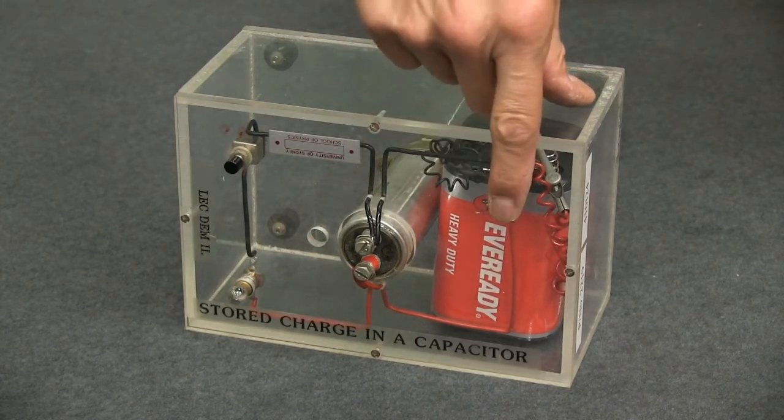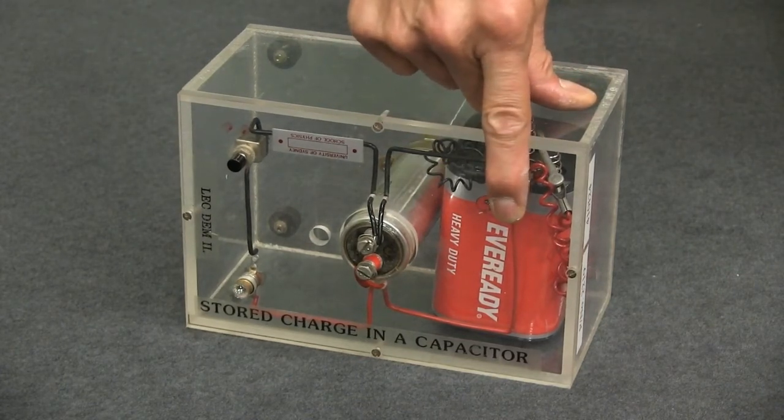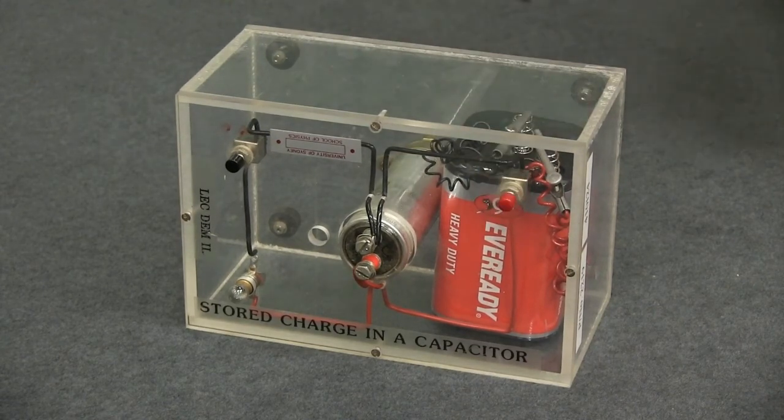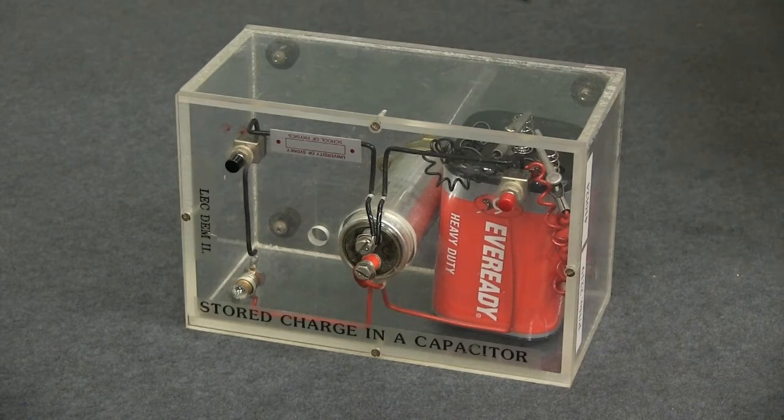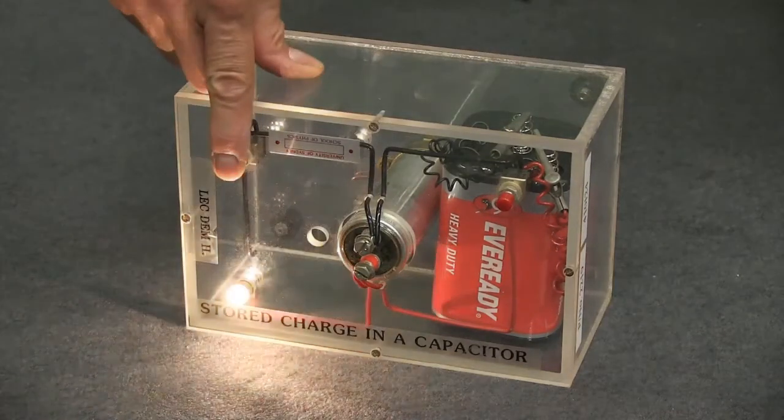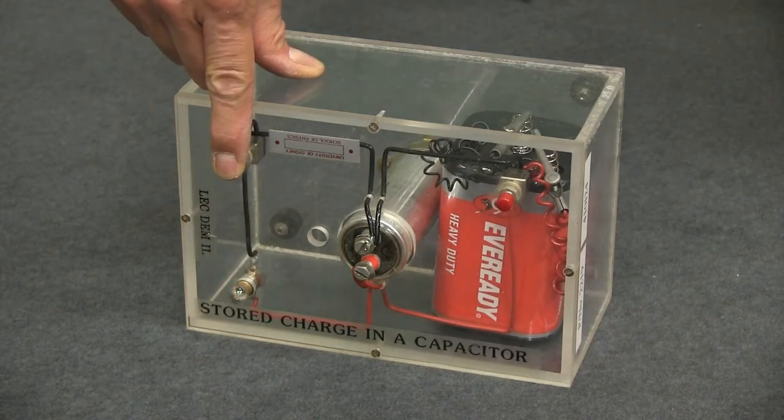What's happening is when I press this button, charge is traveling from the battery into the capacitor. Now the capacitor will temporarily store that charge. Now when I connect the lamp to it, that temporarily stored charge discharges through the lamp and the lamp lights up.